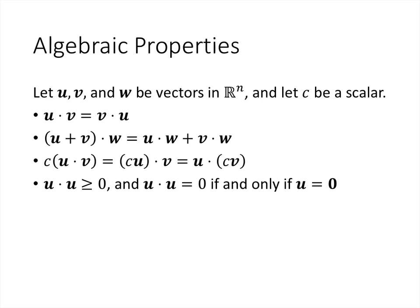Speaking of scalar multiplication, c times u dot v is the same as (c times u) dot v, and that's the same as u dot (c times v). So if I ever use the word 'times,' I mean scalar multiplication. If I use the word 'dot,' I mean the dot product or inner product.